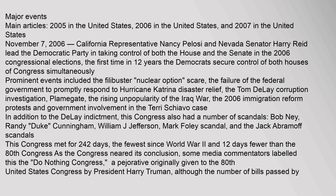Major events. Main articles: 2005 in the United States, 2006 in the United States, and 2007 in the United States. November 7, 2006: California Representative Nancy Pelosi and Nevada Senator Harry Reid led the Democratic Party in taking control of both the House and the Senate in the 2006 congressional elections, the first time in 12 years the Democrats secured control of both houses of Congress simultaneously. Prominent events included the filibuster nuclear option scare, the failure of the federal government to promptly respond to Hurricane Katrina disaster relief, the Tom DeLay corruption investigation, Plamegate, the rising unpopularity of the Iraq War, the 2006 immigration reform protests, and government involvement in the Terri Schiavo case. In addition to the DeLay indictment, this Congress also had a number of scandals.